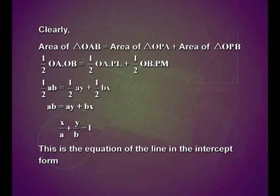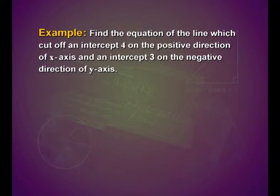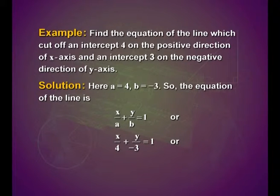This is the equation of the line in the intercept form. Let us solve an example: find the equation of the line which cuts off an intercept 4 on the positive direction of the x axis and an intercept 3 on the negative direction of the y axis. Here a equals 4 and b equals minus 3. So the equation is x upon 4 plus y upon minus 3 equals 1, which simplifies to 3x minus 4y equals 12.